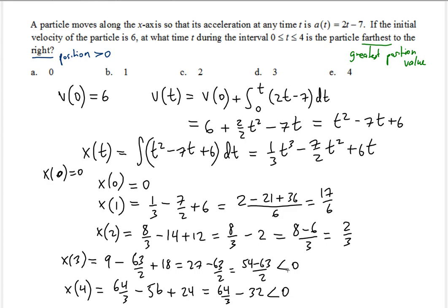So the leader stays the leader — t equals 1 gives the greatest position value. The particle is farthest to the right at t equals 1. That is the correct answer.